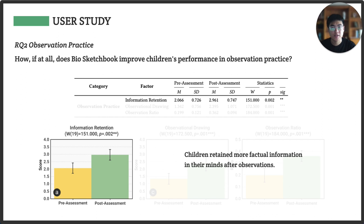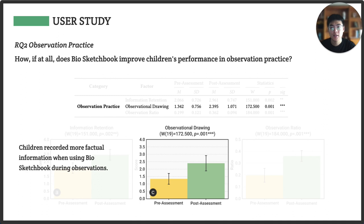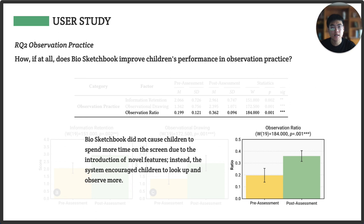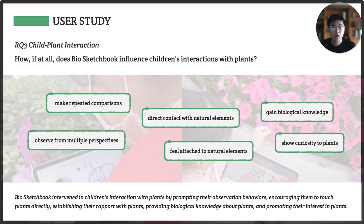Regarding observational practice, we found children retained more factual information in their minds after observations, comparing the pre- and post-assessments. During the observations, children could also record more factual information in their journals. Inspired by the screen time tension between parents and children in nature-based activities, we calculated the proportion of time they spent on observations rather than on screen. The result showed that Bioscatebook didn't cause children to spend more time on the screen. Instead, the system encouraged children to look up and observe more, and significantly enhanced children's interaction with plants.